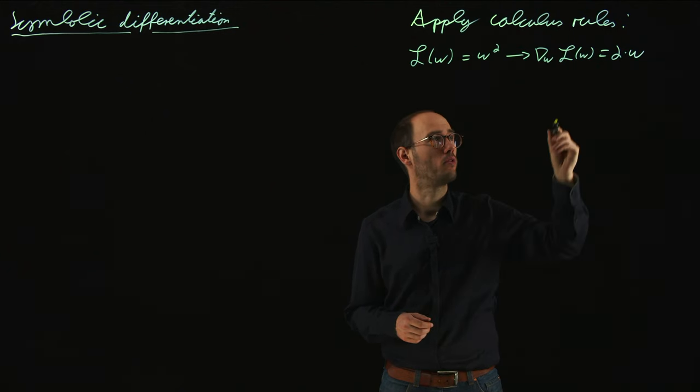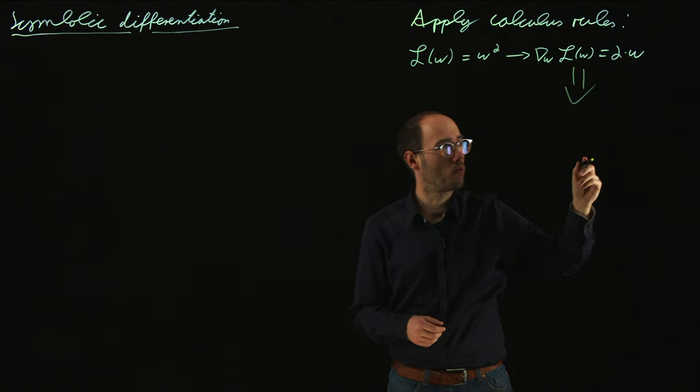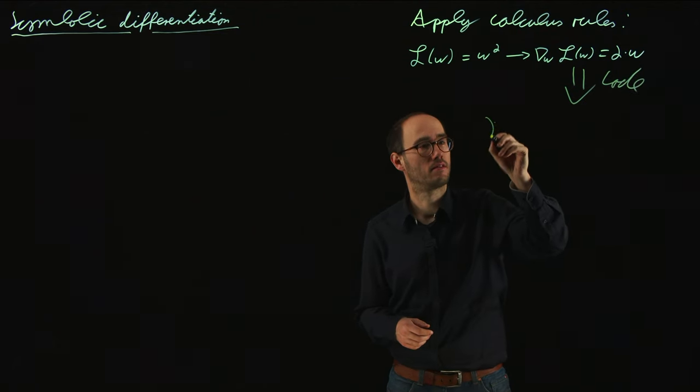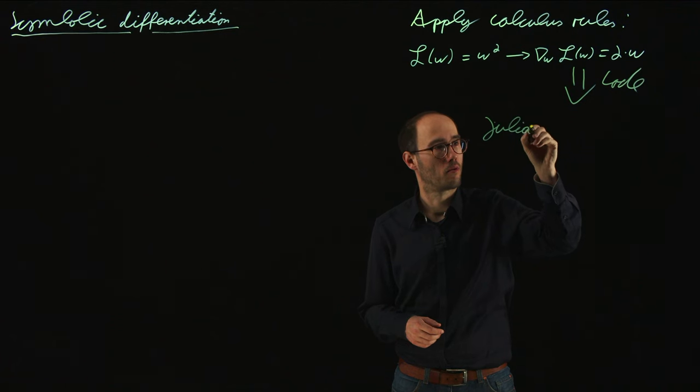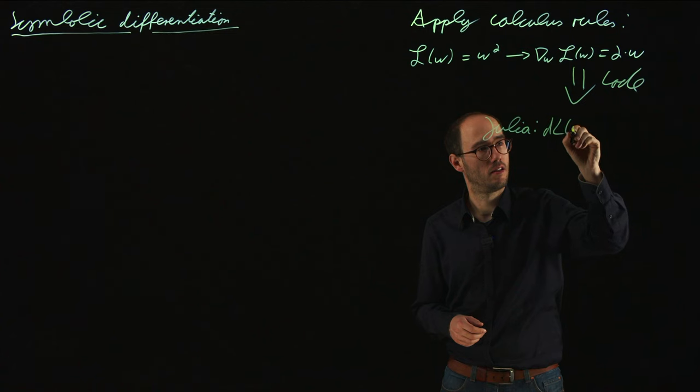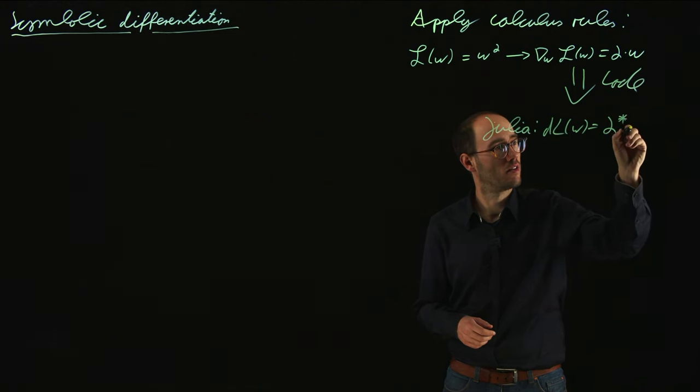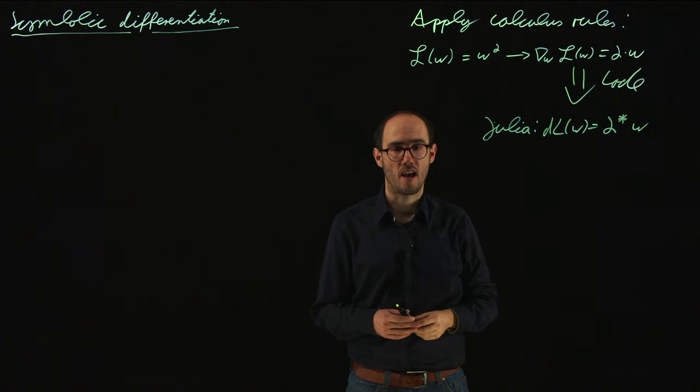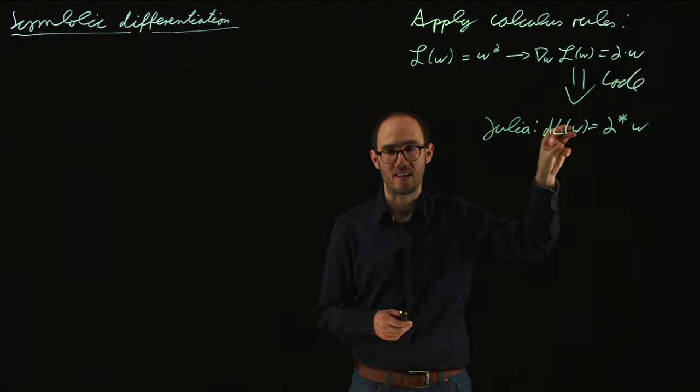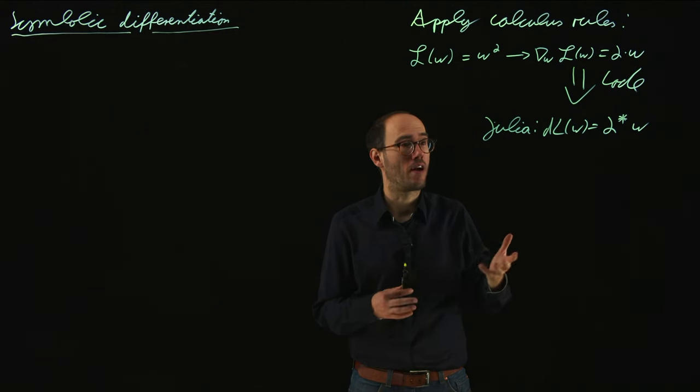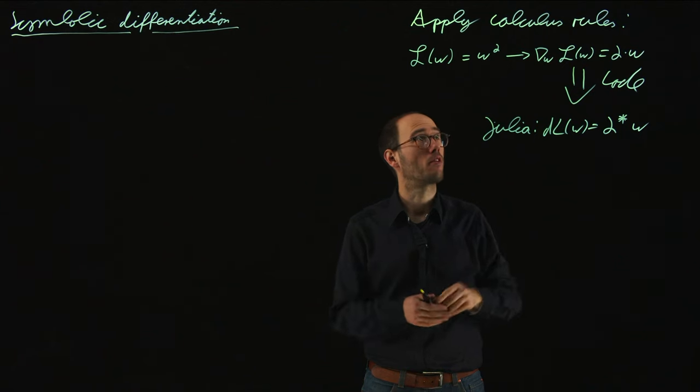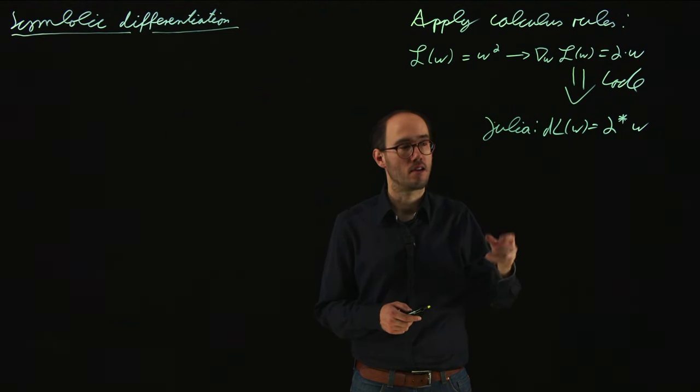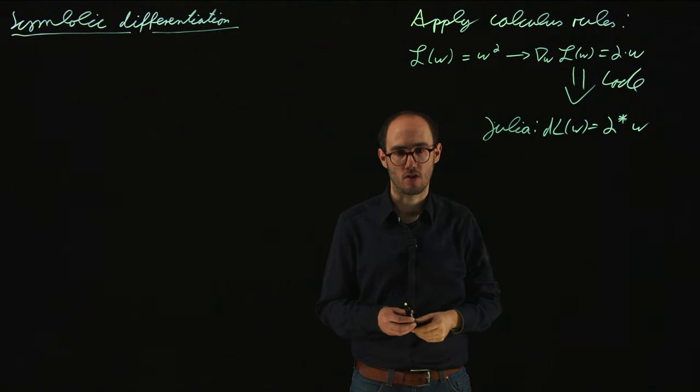So what we would do with that example is basically put it into programming code. So for example in Julia, we would write down a function DL(w) = 2w. And then we would implement the gradient information, or eventually also the Hessian of this function as computing code, as a function. So that is basically all around symbolic differentiation we already need to know.